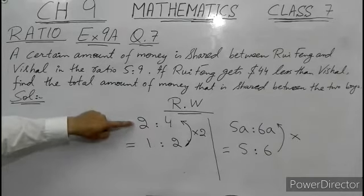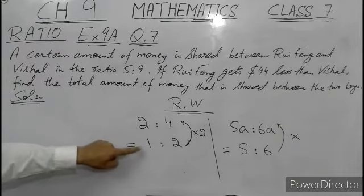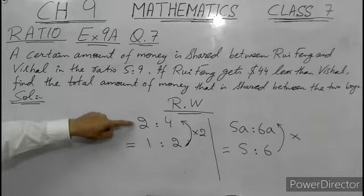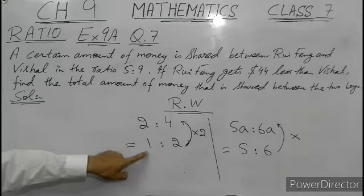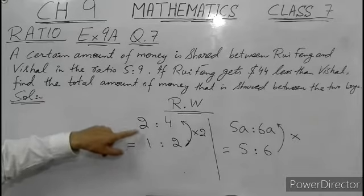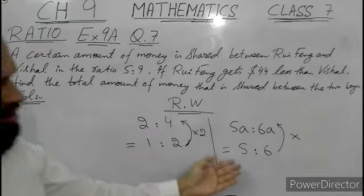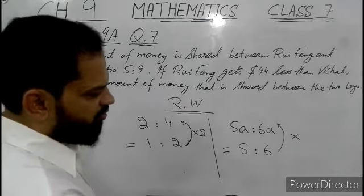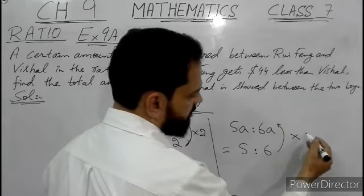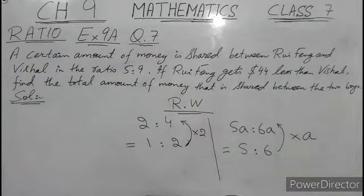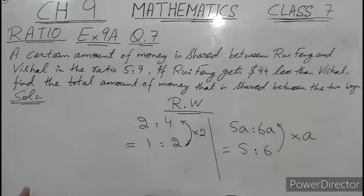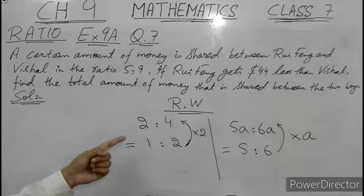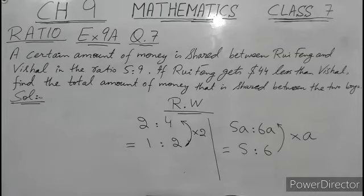2 is to 4 is the original ratio and we form the simplified form: 2 is to 4, both are divisible by 2, so simplified form is 1 is to 2. How can we form the original ratio from the simplified form? We multiply by 2. Here we have given the simplified form of a ratio, so we will multiply with some unknown, say a, b, x, or y.